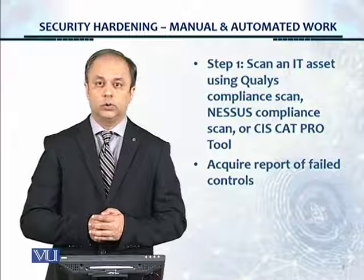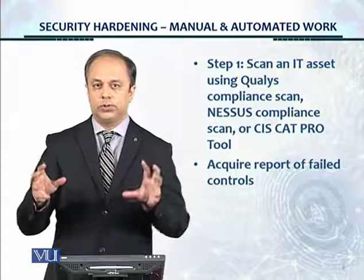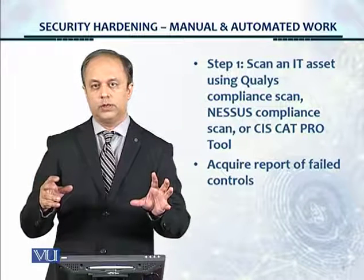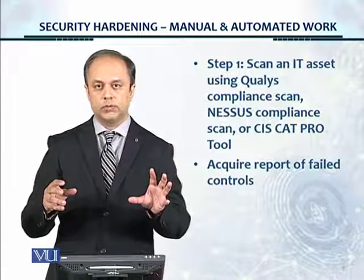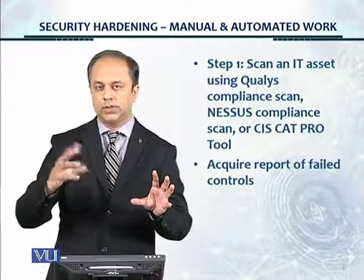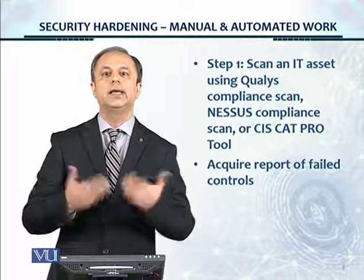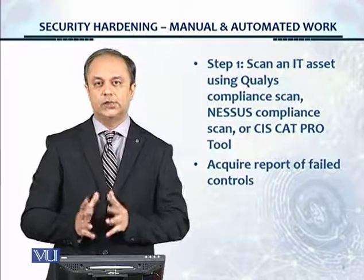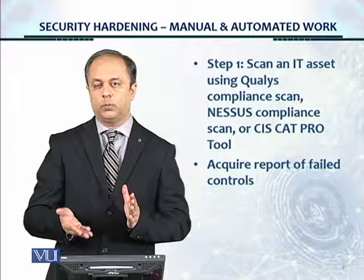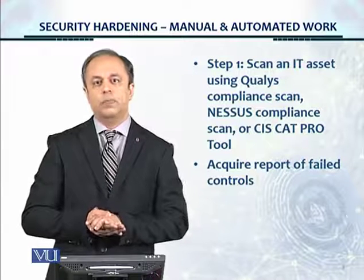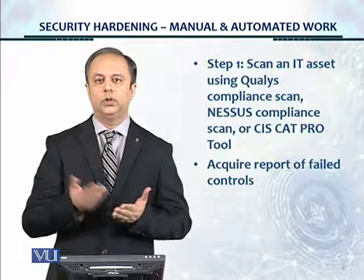Acquire the report of failed controls. For example, if we want to secure Windows Server 2012 R2, first get the Windows Server 2012 R2 image and run a compliance scanner like Qualys compliance scan. It will tell you which controls for the Windows Server 2012 R2 CIS Security Benchmark have failed. So if there are 400 controls, the scan report might show 150 controls passed and 250 controls failed.